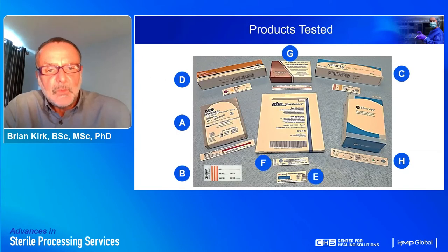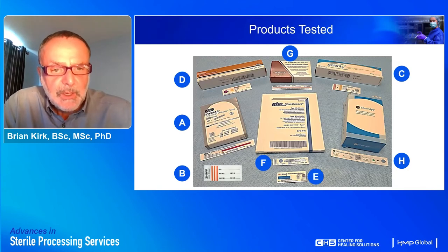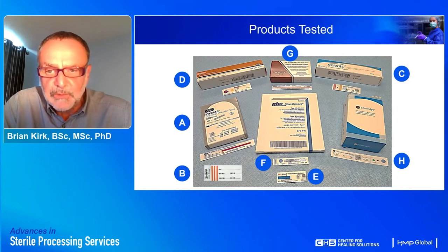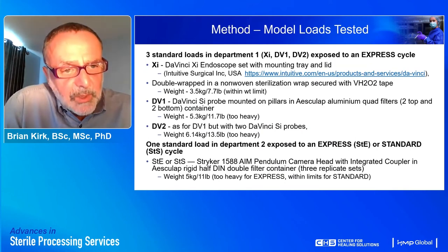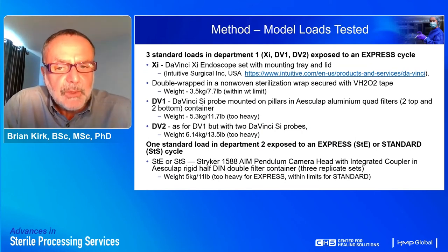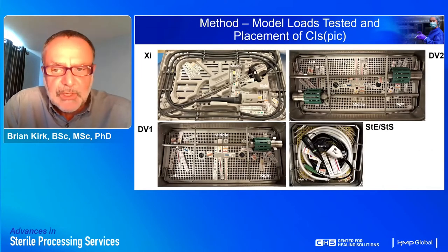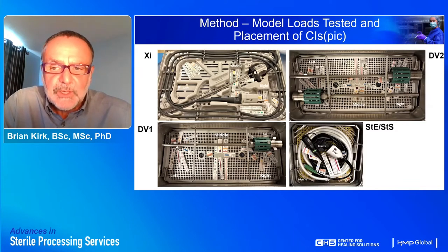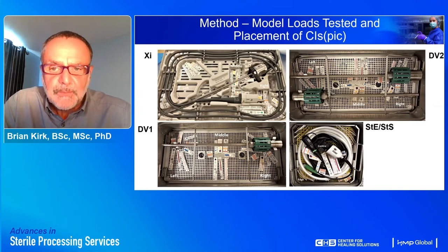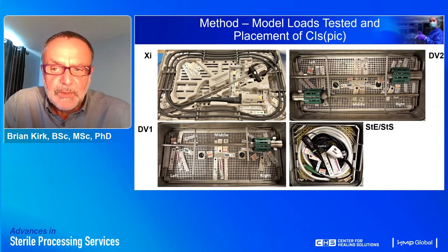These are the products tested — manufacturers from various parts of the world. The model loads are shown in pictures which are more descriptive: the positioning of groups of CIs labeled left, middle, and right for loads XI, DV1, and DV2.